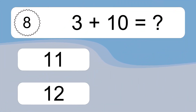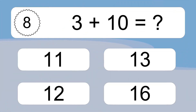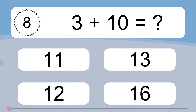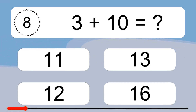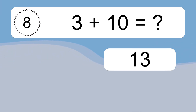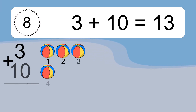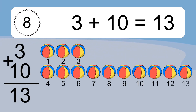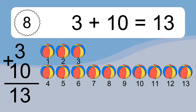3 plus 10 equals what? 3 plus 10 equals 13. Let's count it: 1, 2, 3, 4, 5, 6, 7, 8, 9, 10, 11, 12, 13.